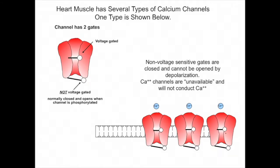In cardiac muscle, the dihydropyridine receptors are voltage-gated calcium channels, in that they have a gate that is opened by depolarization, and when opened, it allows calcium to flow through the open channel. Some of these channels, however, have two gates. One gate is opened by voltage — it's voltage-gated. The second gate is closed and cannot be opened by voltage; that gate is only opened when the channel is phosphorylated. When these channels are not phosphorylated, they are unavailable — even though the voltage-sensitive gate opens with depolarization, calcium cannot flow through the channel because it is blocked by the non-voltage-gated gate.